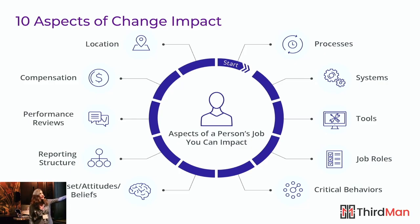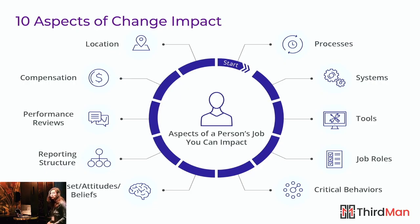When you think about change — the world is always changing — how people go through that process is critically important. He identified 10 aspects that impact people and their job and their roles. A couple of these have direct correlation to governance: your systems, your process, your tools. When you change those, which will happen through the course of your project, you're going to need to bring people with you. If you do not support people, they will not come. And what does that mean for your project?